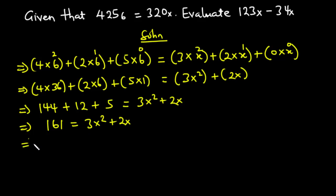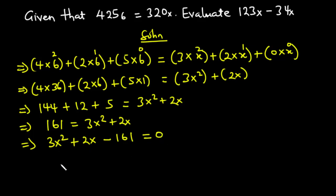Adding 144 plus 12 plus 5 gives 161. Transposing 161 to the right-hand side gives us 3x squared plus 2x minus 161 equals 0. To factorize, we multiply the coefficient of x squared, which is 3, by the constant, which is negative 161: 3 times negative 161 equals negative 483.